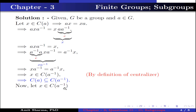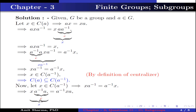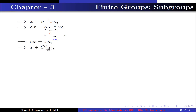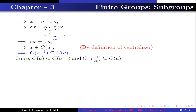Now let x ∈ C(A⁻¹). This implies xA⁻¹ = A⁻¹x by the definition of centralizer. Multiplying A on both sides: xA⁻¹·A = A⁻¹x·A. Since A⁻¹A = identity, we get x = A⁻¹xA. Multiplying A on both sides: Ax = A·A⁻¹·xA = xA. This implies x ∈ C(A) by the definition of centralizer. Therefore C(A⁻¹) ⊆ C(A). Since C(A) ⊆ C(A⁻¹) and C(A⁻¹) ⊆ C(A), we conclude C(A) = C(A⁻¹).